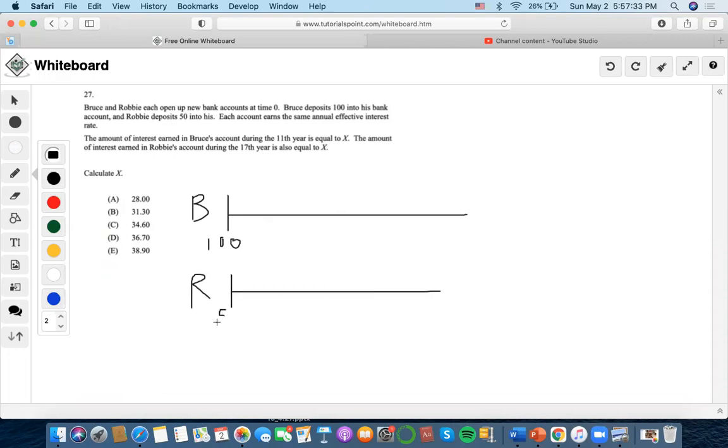Each account earns the same annual effective interest rate. The amount of interest earned in Bruce's account during the 11th year is equal to x, which means within the time span between the 10th and 11th year. The amount of interest earned in Robbie's account during the 17th year is also equal to x, which means within the time span between the 16th and 17th year.